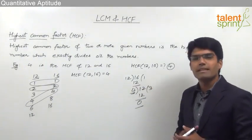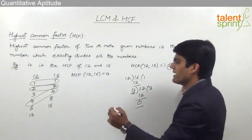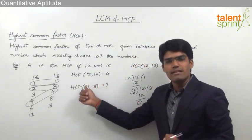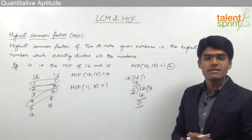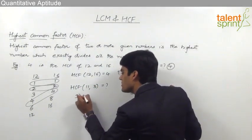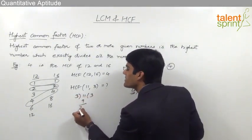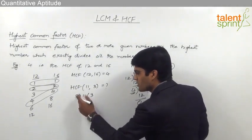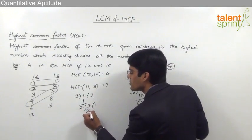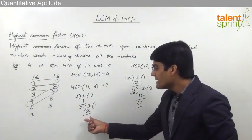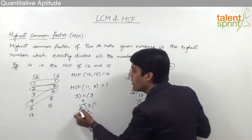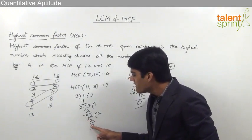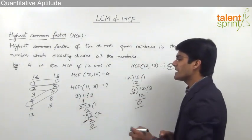Let us take one more example: find the HCF of 11 and 3. We divide 11 by 3: 3 times 3 is 9, remainder 2. Since remainder is not zero, 2 becomes the new divisor and 3 becomes the new dividend. 3 divided by 2: 2 times 1 is 2, remainder 1. Still not zero, so 1 becomes the new divisor and 2 becomes the new dividend. 2 divided by 1: 1 times 2 is 2, remainder 0. The last divisor is 1, so HCF of 11 and 3 is 1.